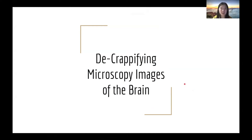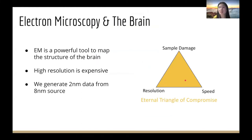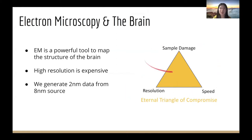Hi everyone. This marks the end of our WAMRI journey this year, and here we present our work. Our focus is decryptifying microscopy images of the brain. Electron microscopy is a powerful tool to map the structure of the brain. Like all imaging tools in biology, EM suffers from the so-called eternal triangle of compromise, which means that within the microscopy system, there is no way to enhance resolution without sacrificing imaging speed and sample damage. So we train deep learning models for a solution.